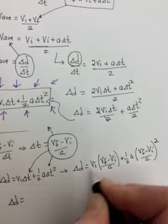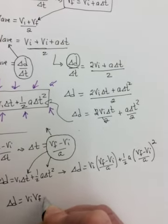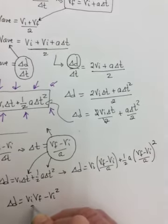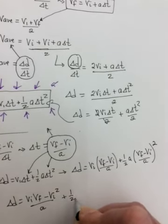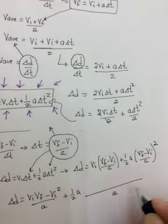So my first term, when I multiply through, I will have VI VF minus VI times VI will be VI squared. And these are both over a, plus one half a.